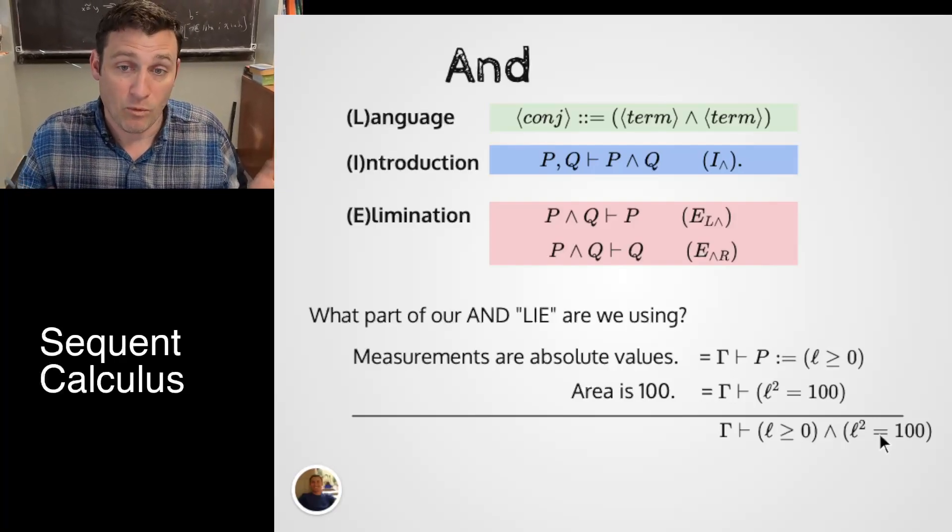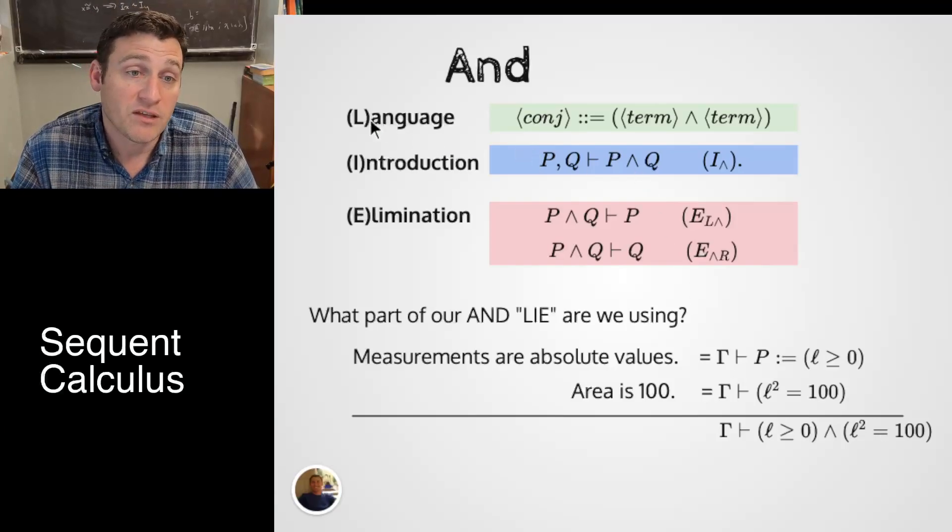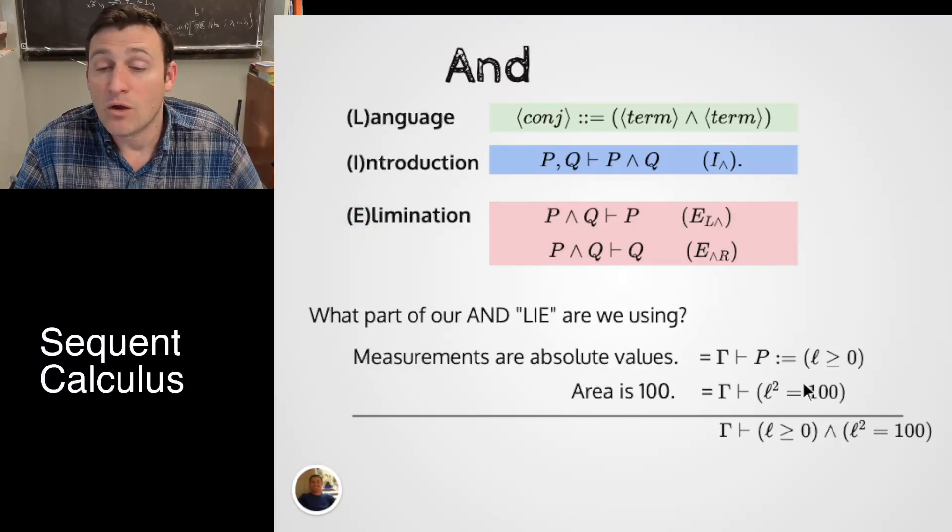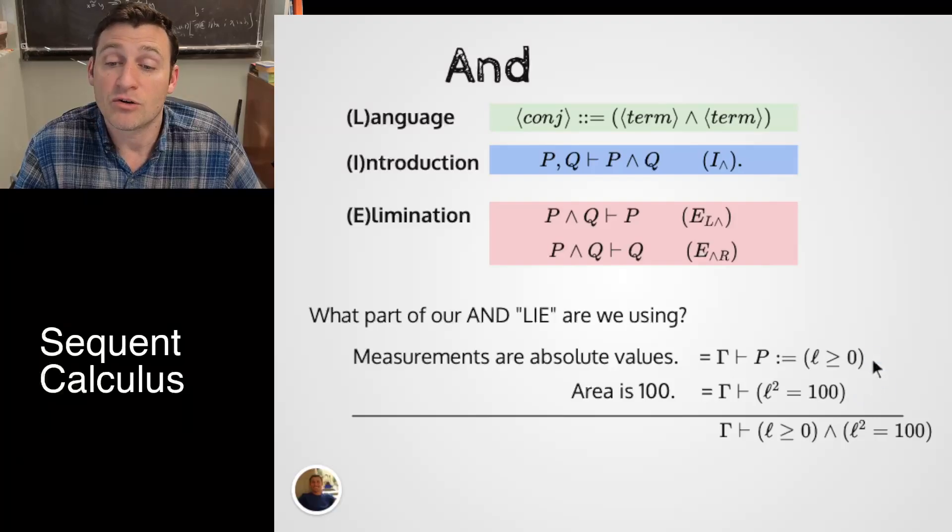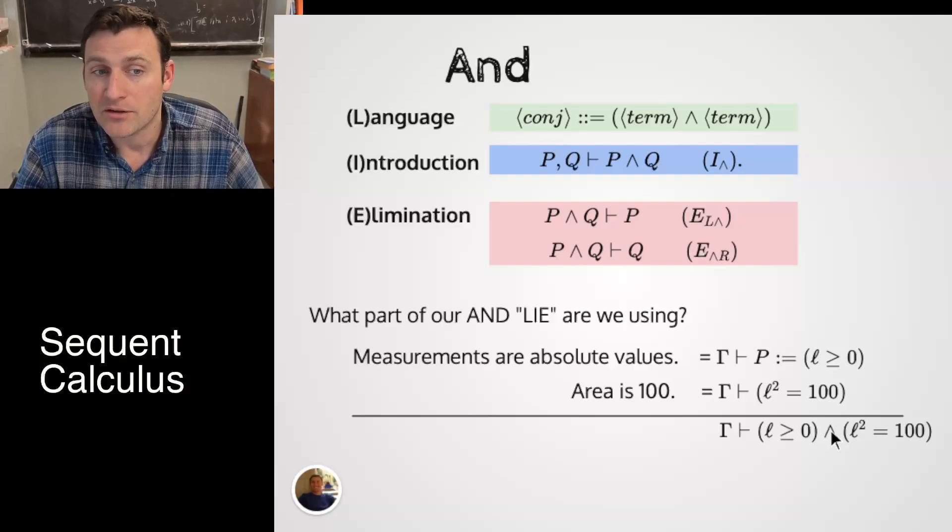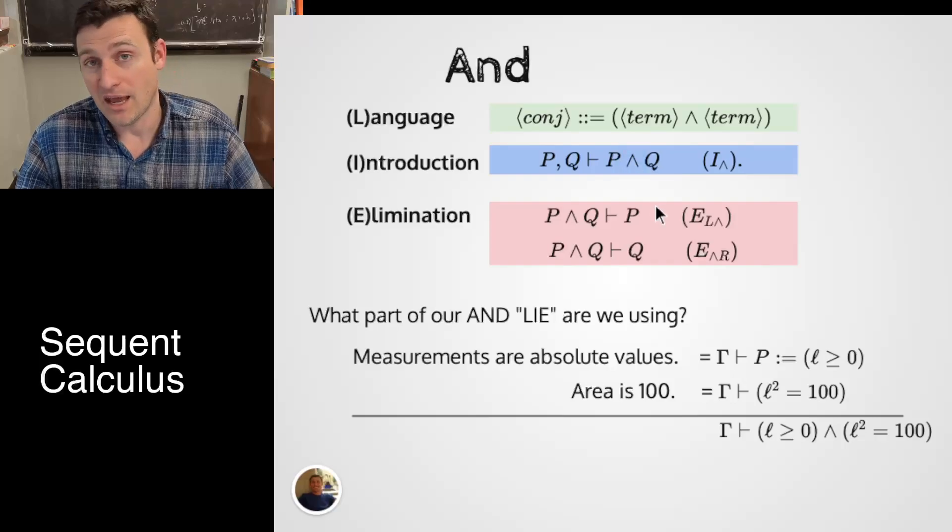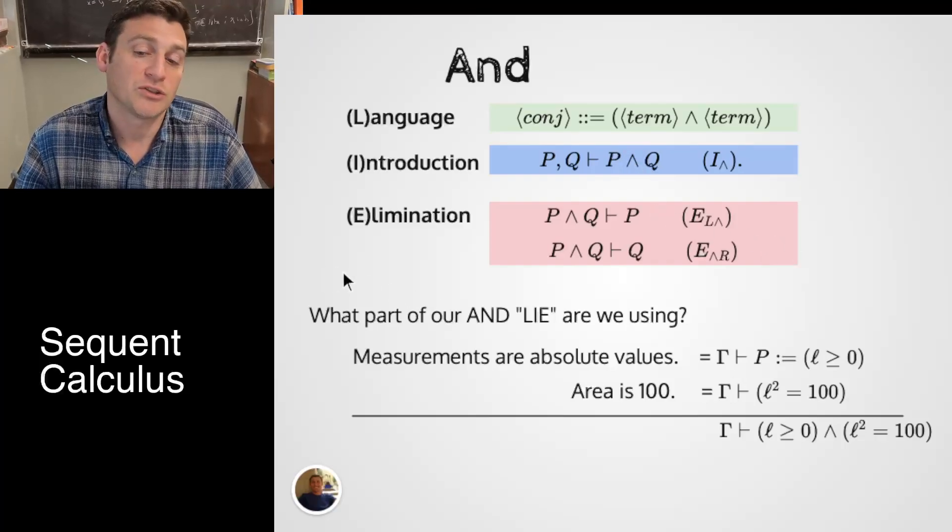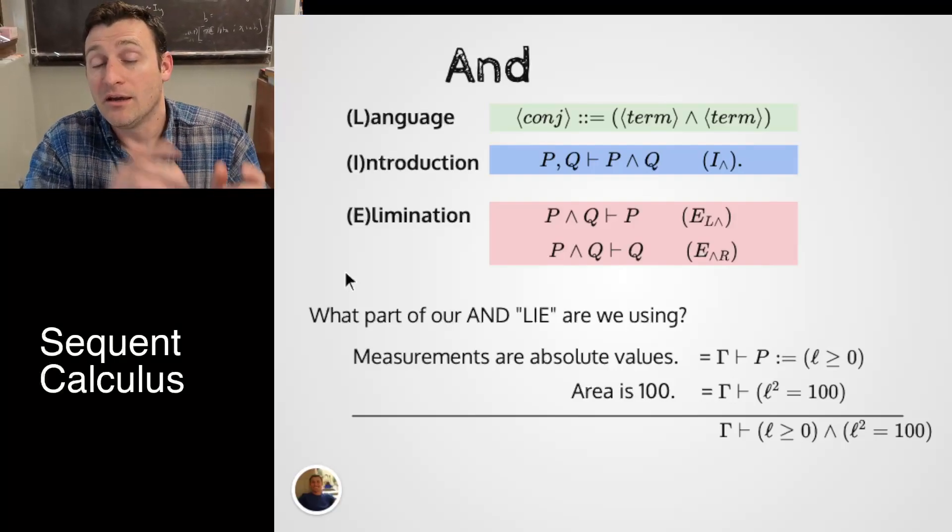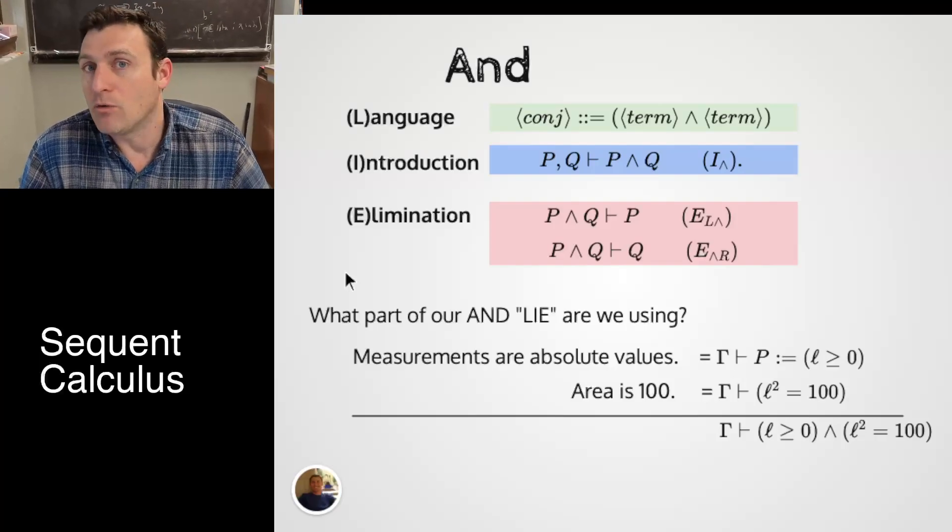Now forgetting about the details about what this stuff is talking about, areas and squares and square roots, let's look at which of these L, I, or E we just applied to get to the conclusion. Well, the premises are above the line. So these are two separate facts combined into one single conjunction, an AND. So to me, that reads as this one here. I have a P and a Q, and they entailed the AND symbol. I've used the introduction rule. That's simple. The key thing is to identify whether I'm using L, I, or E and apply it correctly.